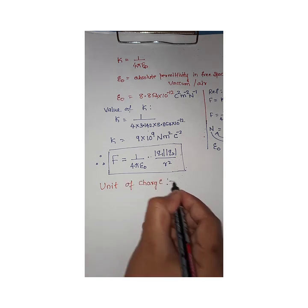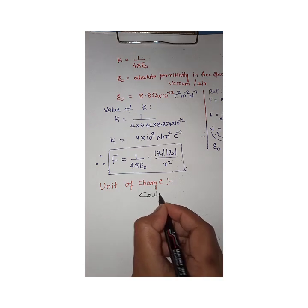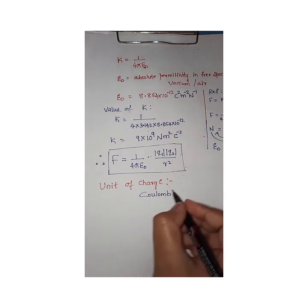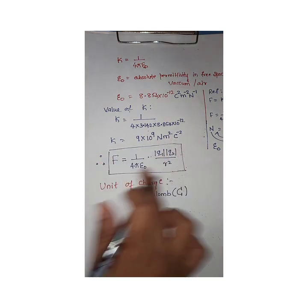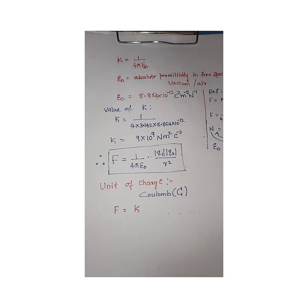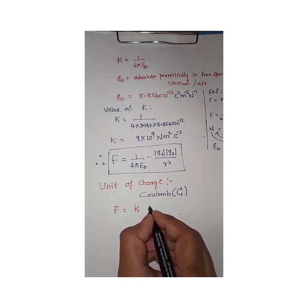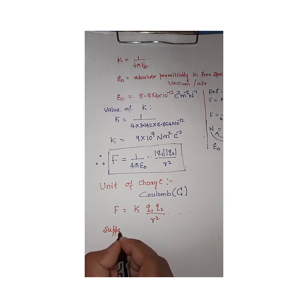Now we will study the unit of charge. The SI unit of charge is Coulomb, written with the symbol capital C, named after the scientist Coulomb. To define one Coulomb, we use the Coulomb's Law expression: F = k · |Q1||Q2| / r².